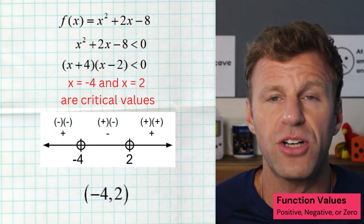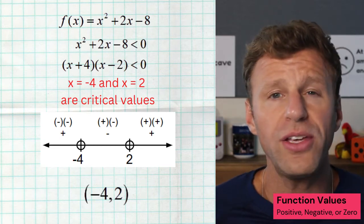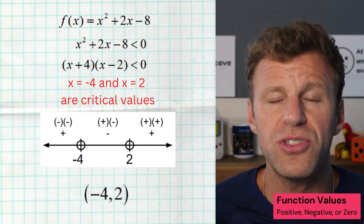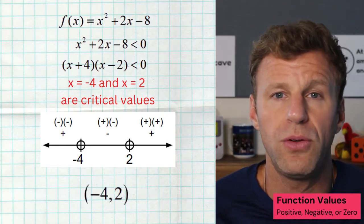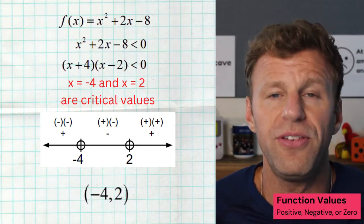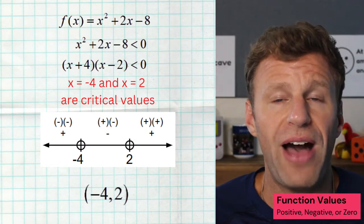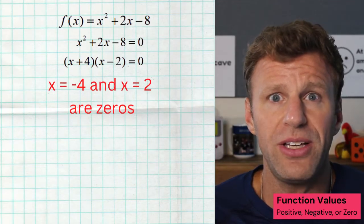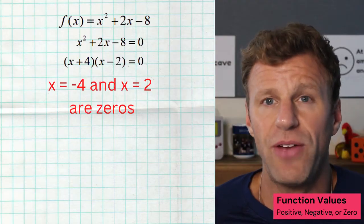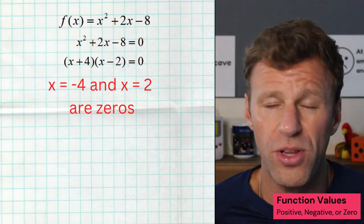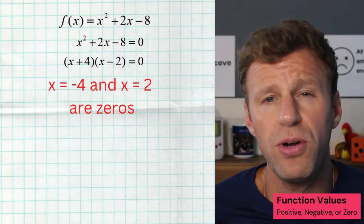We can also analyze where this function is less than zero using the same approach — simply set it less than zero and solve. We got our critical values negative four and two; put them on a number line, find those intervals, and where our function is negative is going to be values in between negative four and two. All you've got to do is find those critical values, test the values to the left, in the middle, and to the right, and you'll determine where you are positive or negative. And lastly, we can find where we are equal to zero — just set your function equal to zero and solve. We have a quadratic so we use the quadratic formula or factor it, and we get our two solutions of negative four and two.